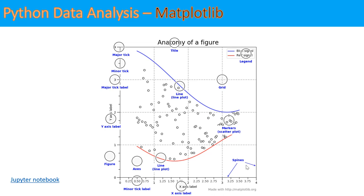Before going to how to draw a plot, basically a figure has a y-axis and x-axis. These lines are called minor ticks, and these lines are called major ticks. This is where the title goes, and here is the legend - like this is my line in blue color, this is the red color - what it means. You can place the legend anywhere. This is the anatomy of a figure.